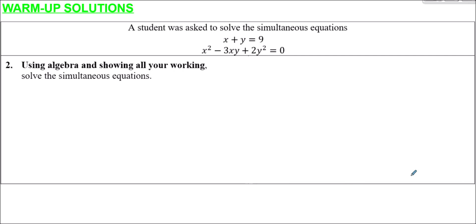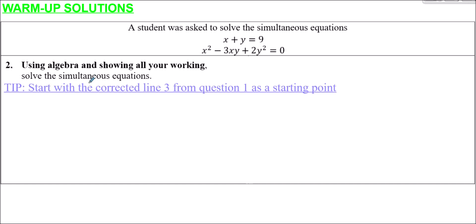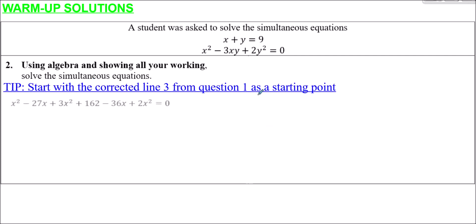Question two: using algebra and showing all your working, solve the simultaneous equations. We can use part of the question from before to help us. My suggestion would be to start with the corrected line three from question one as a starting point — that's what we had with plus 3x instead of a minus. So this has now been corrected, and we can now group together like terms.